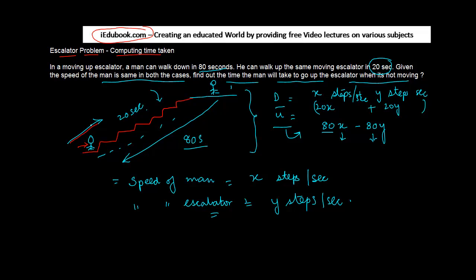But you know that the total distance covered in going up and coming down is equal. So in other words, this d is equal to u, or 20x plus 20y is equal to 80x minus 80y.